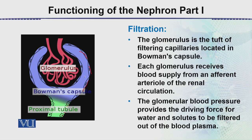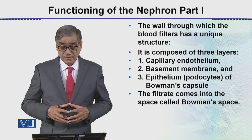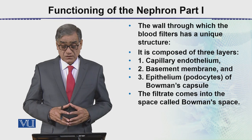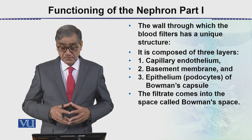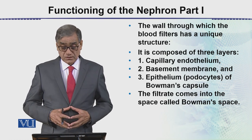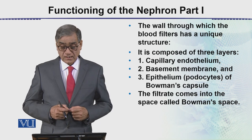This filter wall is very thin — on the order of microns. The wall through which blood filters has a unique structure composed of three layers: the capillary endothelium, then a basement membrane, and the epithelium which we call the podocytes of the Bowman's capsule.